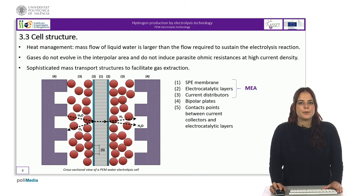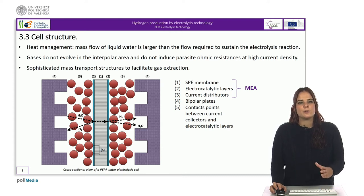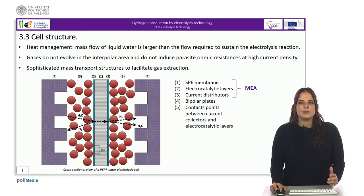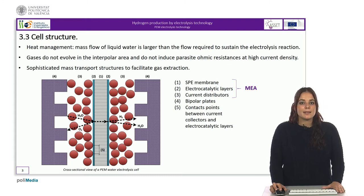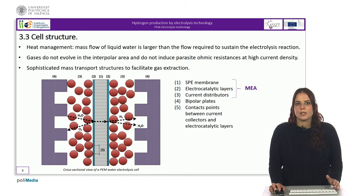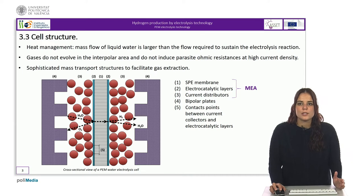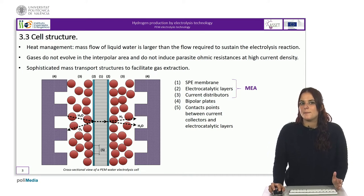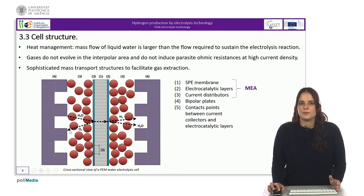During operation, liquid water is pumped through the anode compartment and sometimes also through the cathode compartment for the purpose of heat management. The mass flow of liquid water is therefore larger than the flow required to sustain the electrolysis reaction. In terms of mass flow, the flows of molecular hydrogen and electroosmotic water at the cathode are collinear. On the other hand, at the anode, there is a counterflow of gaseous oxygen from the anodic catalytic layer back to the main stream of liquid.